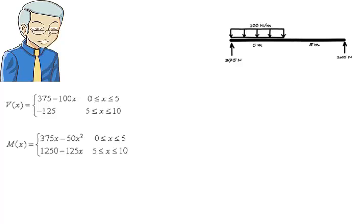Now we want to graph them. For shear, we have two equations. For the left segment of the beam where x is between 0 and 5, shear equals to 375 minus 100x.